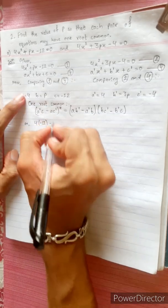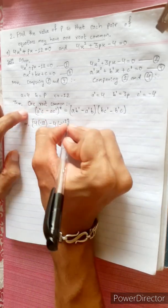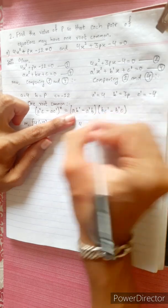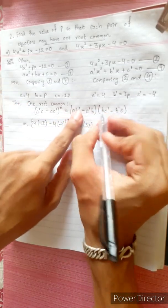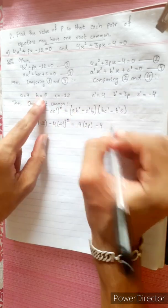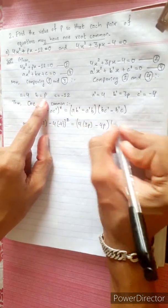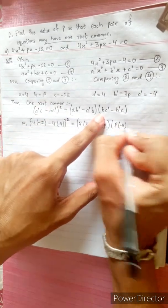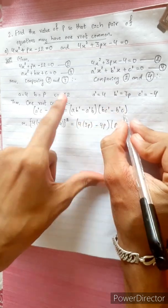Substituting all values: a = 4, c = -12, a' = 4, c' = -4. Then b = p, b' = 3p. So: (4×(-4) - 4×(-12))² = (4×3p - 4×p)(p×(-4) - 3p×(-12)).